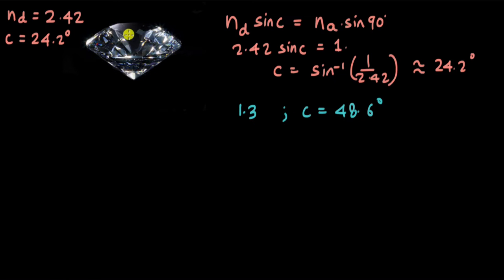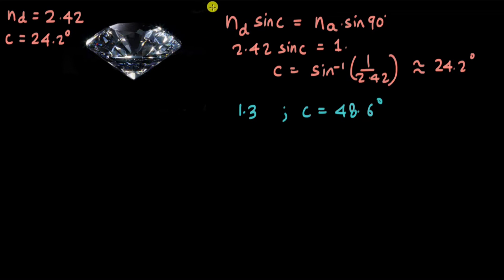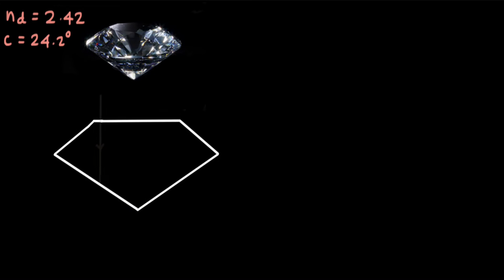It means that if light enters the diamond, it would be very difficult for the light to exit, because the critical angle is so small. It is very possible that every time light is incident on any one of the diamond's faces, the angle of incidence is more than 24.2 degrees. So as a result, it will undergo total internal reflection.